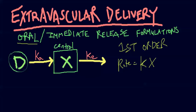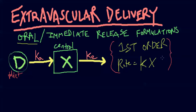Extravascular delivery — that's just oral administration, immediate release, like a tablet. You take it, it sits in your GI tract, gets absorbed at a certain rate into the central compartment. There's no peripheral compartment here, so we know it's a one-compartment model. While the drug is in the central compartment, it gets eliminated at a certain rate.